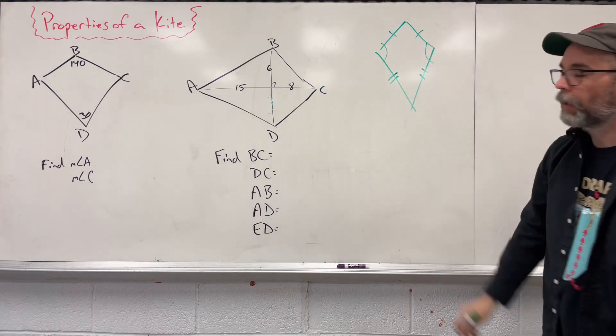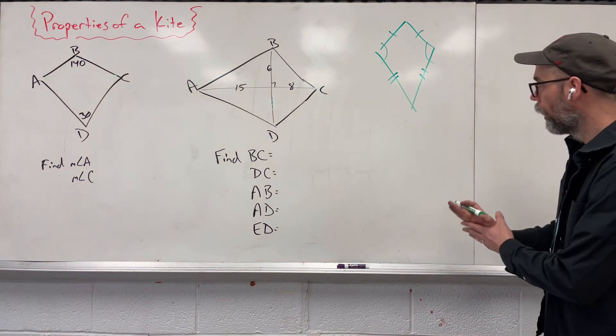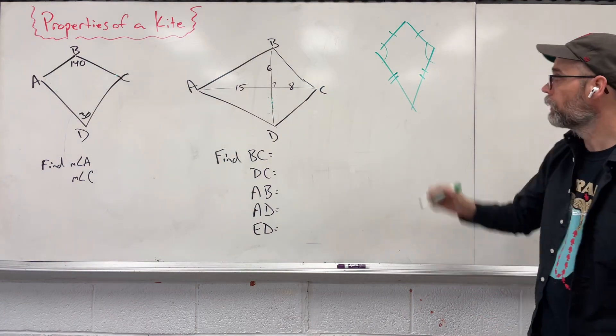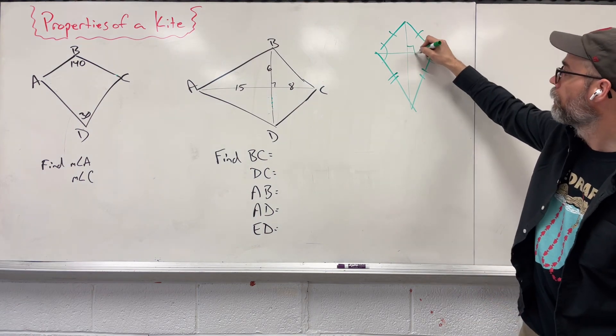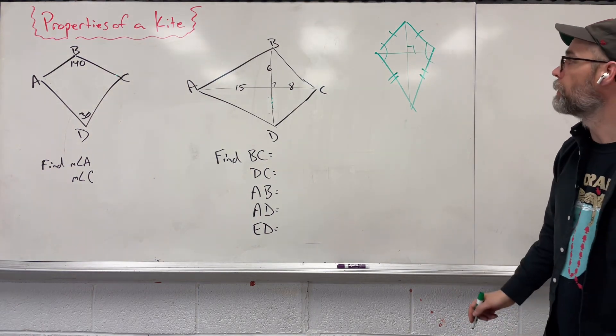We have one set of angles that are going to be exactly the same, that are congruent, and our diagonals form perpendicular lines, giving us a right angle in the middle there.